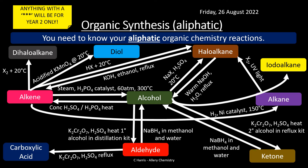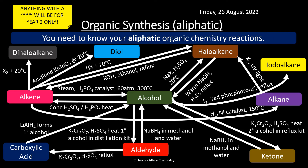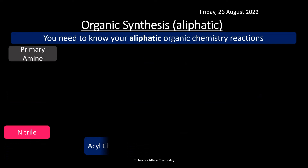Alcohol to iodoalkane: iodine and red phosphorus under reflux — remember that's a very specific reaction. Carboxylic acid to alcohol: lithium aluminium hydride as a reducing agent, forming a primary alcohol. That's the first slide done — as you can see there are a lot of different reactions, which is why you should be building this knowledge up over time.